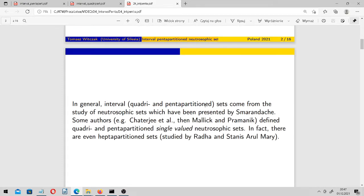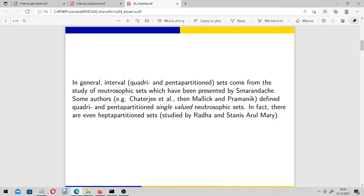You should look at the bibliography for details and know that in general, these interval neutrosophic sets, both quadri- and pentapartitioned, come from the study of neutrosophic sets as such, which have been presented many years ago by Smarandache. Some authors defined quadri- and pentapartitioned single valued neutrosophic sets. In fact, you can find here on this channel several videos especially about pentapartitioned and heptapartitioned sets if you are interested in single valued sets.